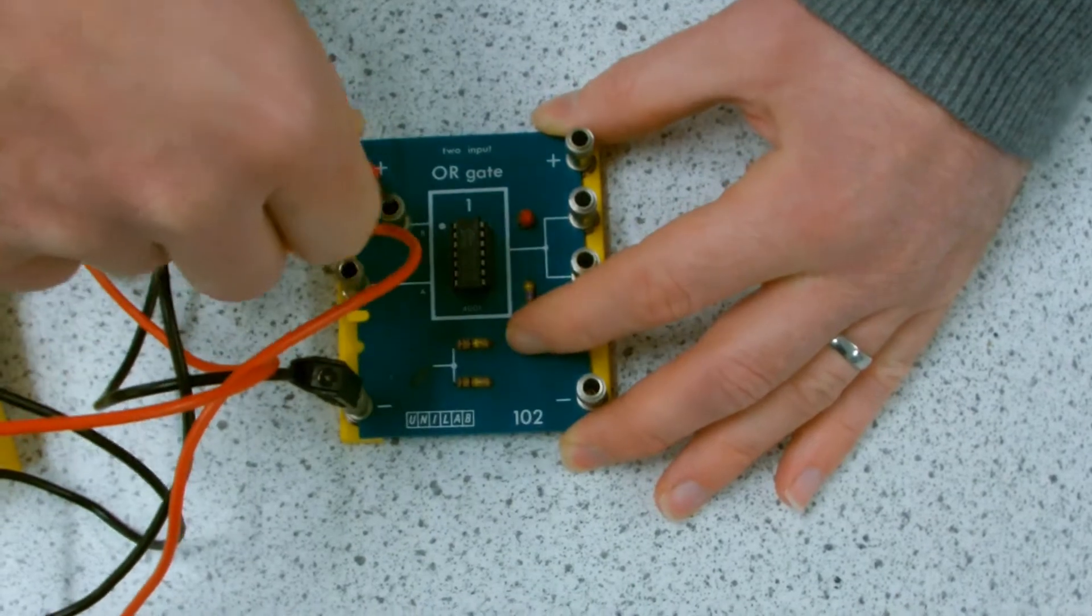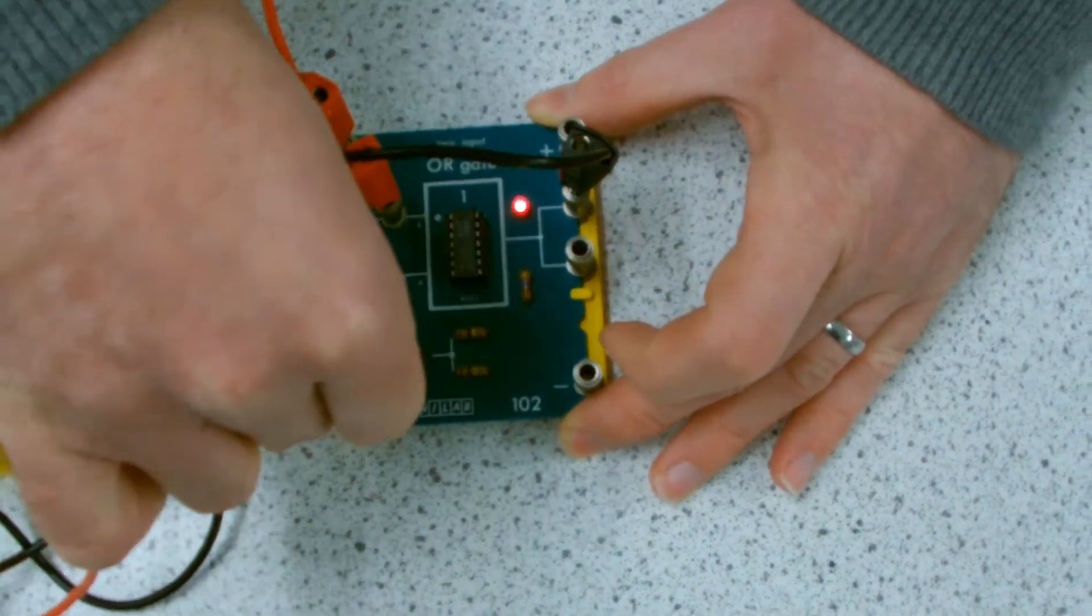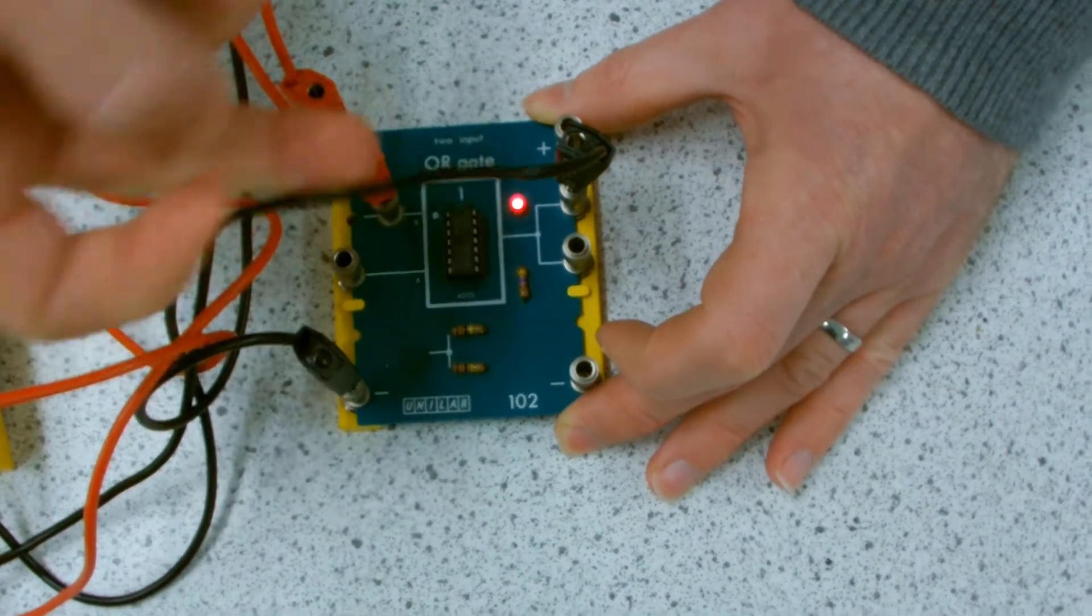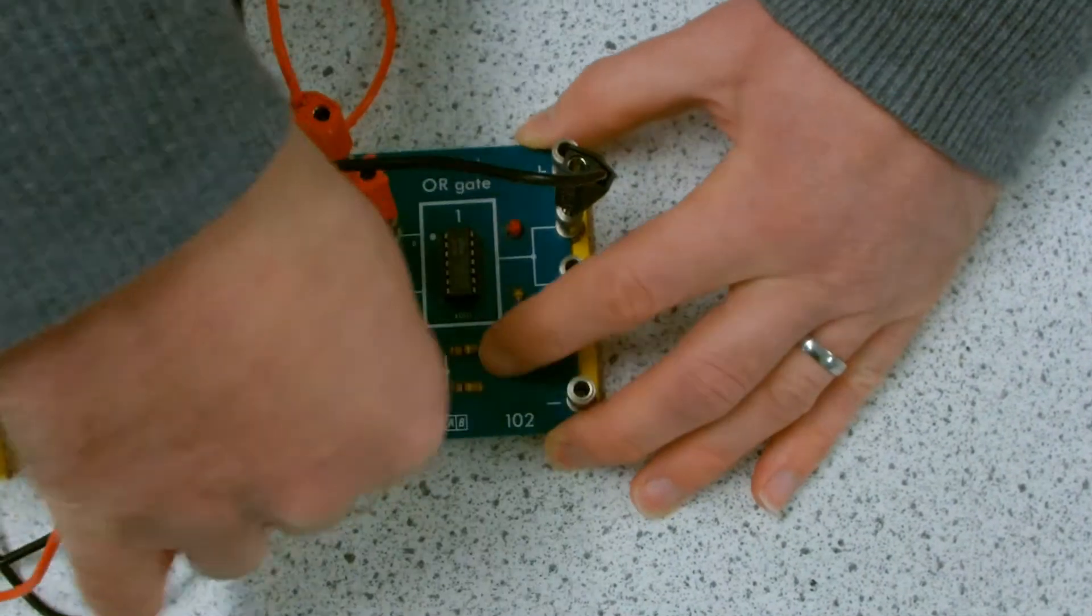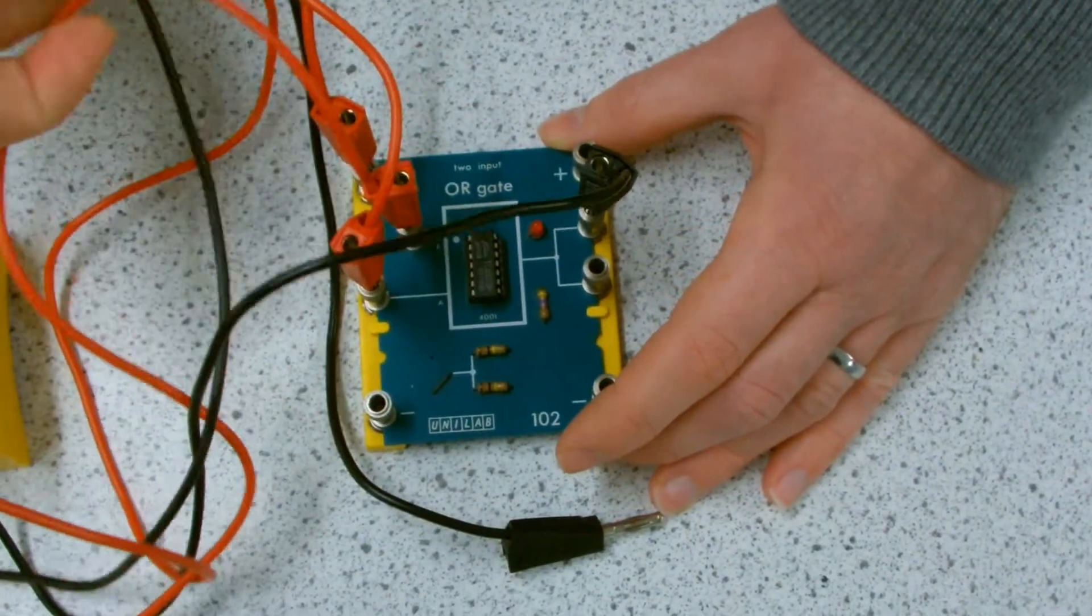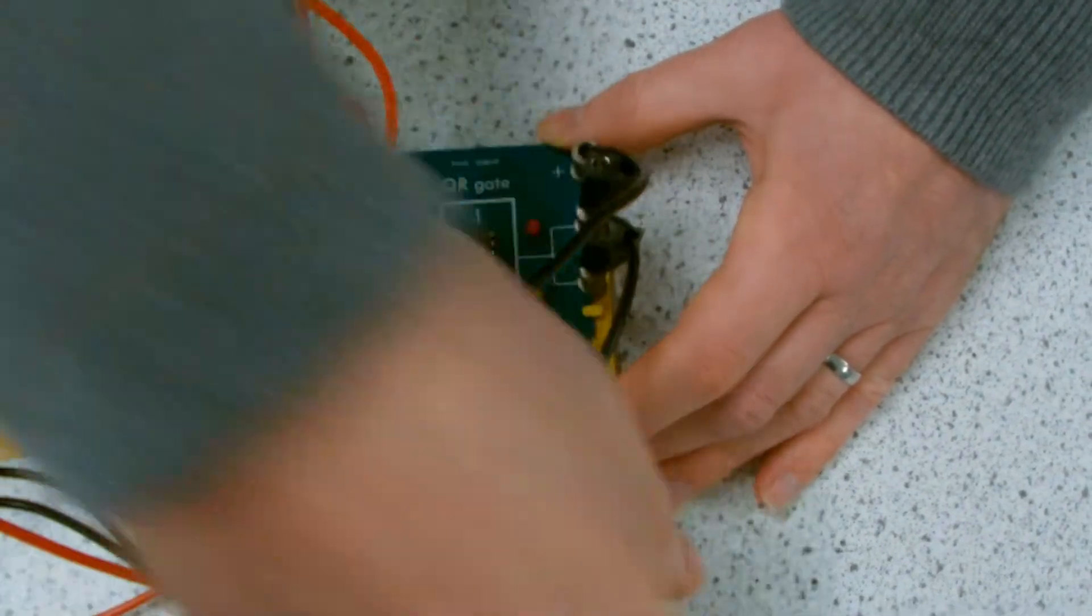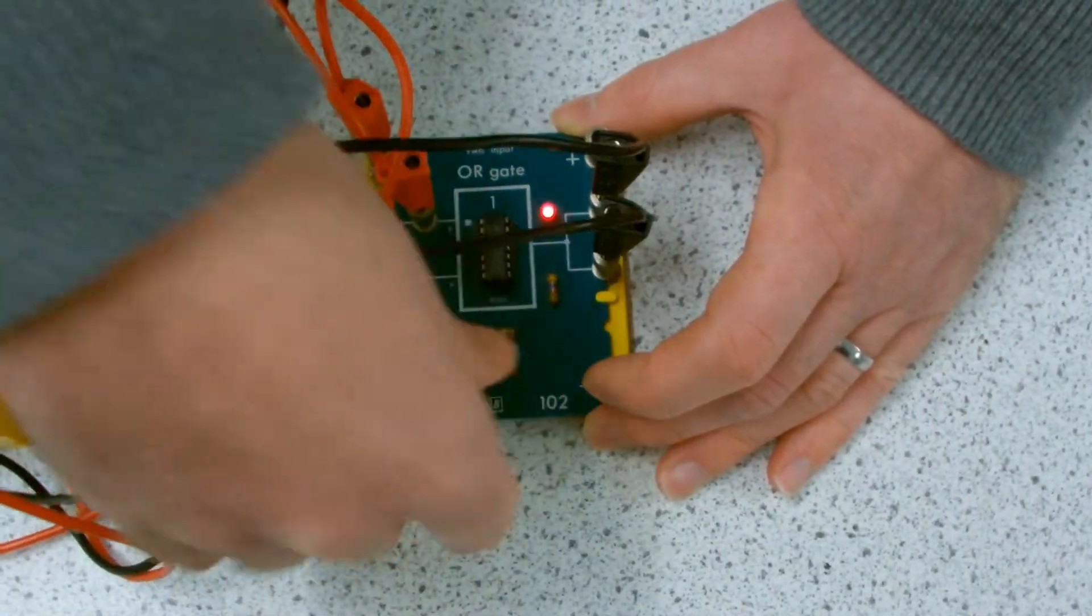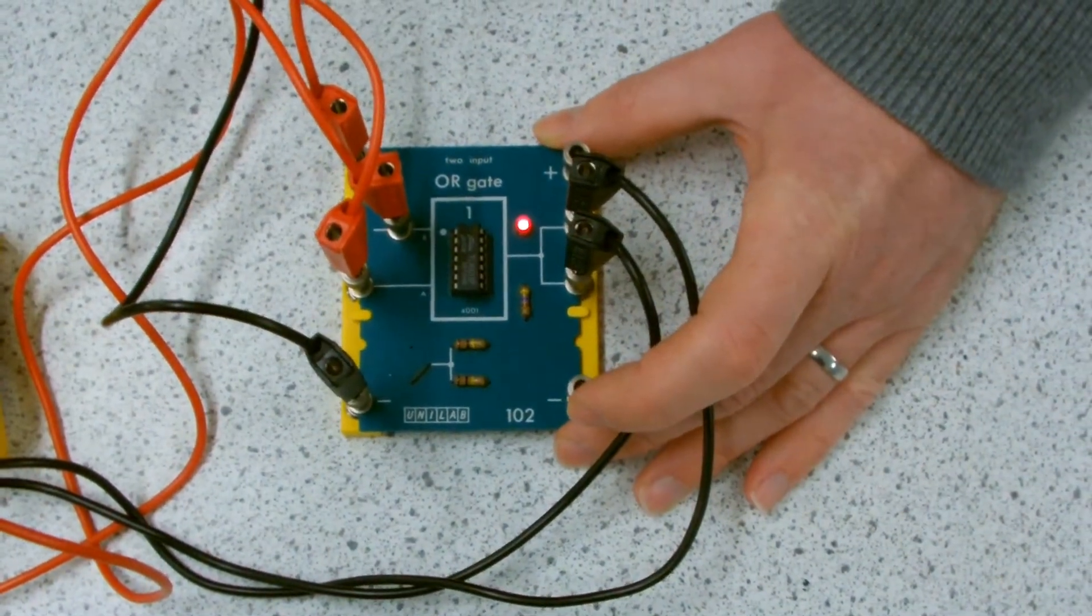Let's see if I plug B in. Oh yeah, so A or B, the output is on. What if both of them are on? Yep, it's still on. A or B or both of them you could say. It's an OR gate.